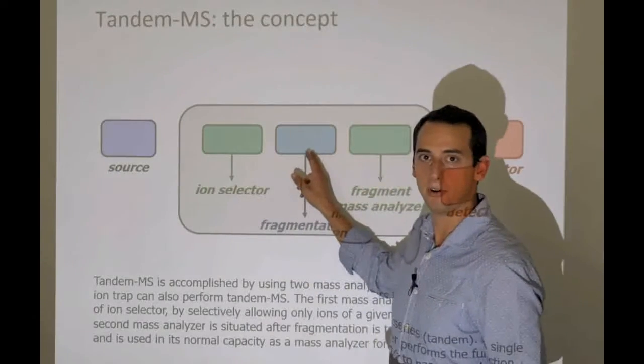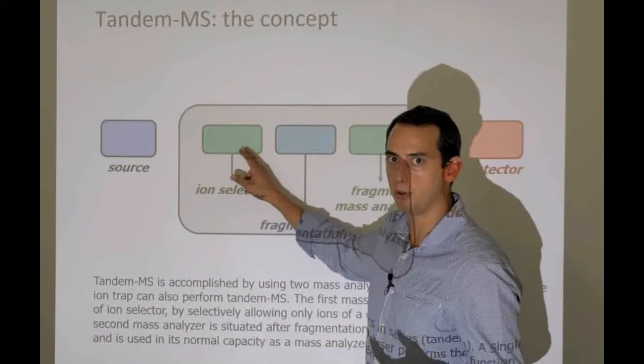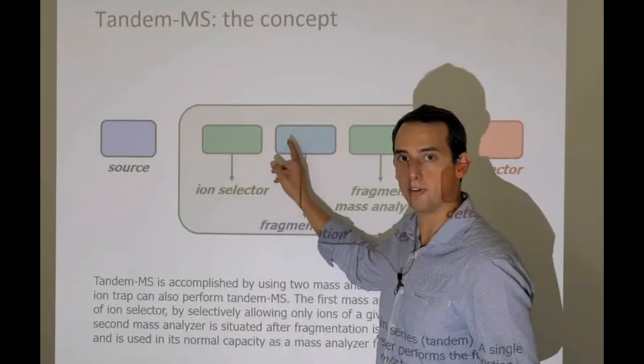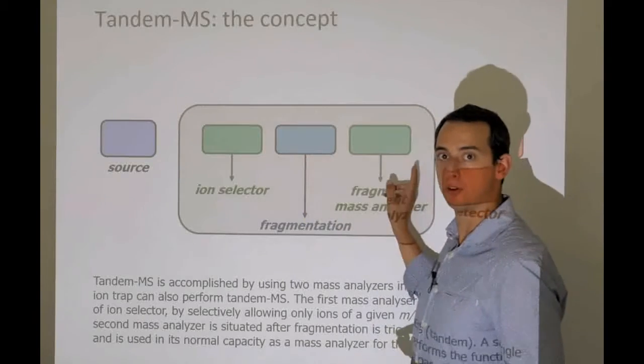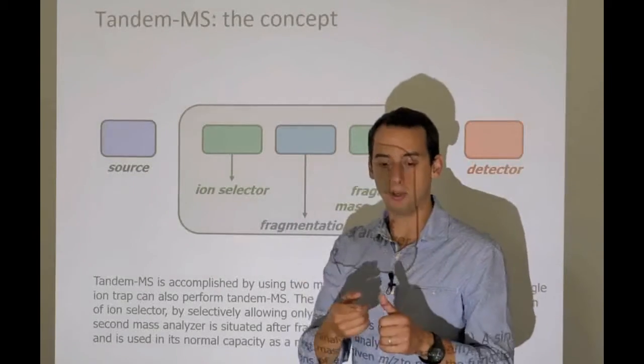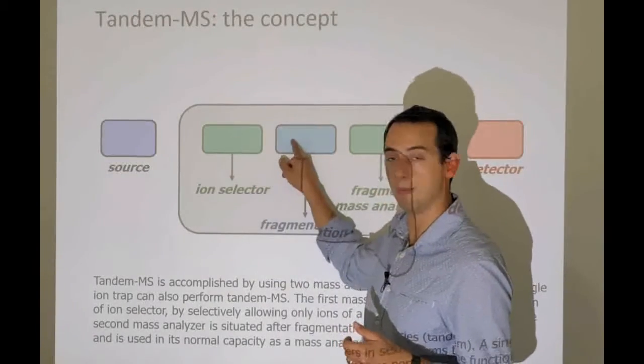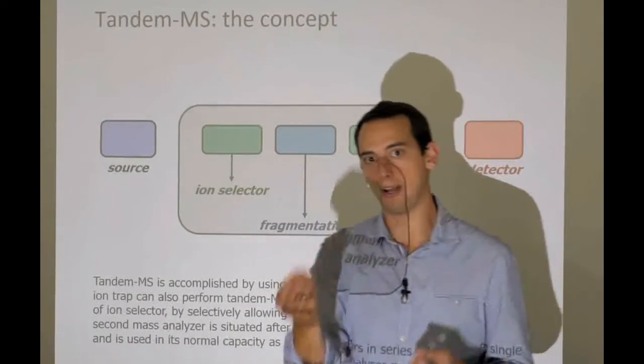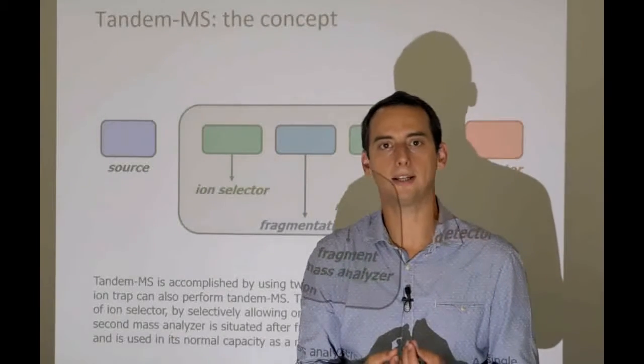Instead of letting all the peptides into the fragmentation chamber at once, we use a bouncer like a quadrupole or an ion trap to keep everybody else out, only let one type of ion in. That type of ion will then be fragmented into its constituent parts and then we measure all the fragments. The combination of the fragments and the intact mass should be enough to uniquely identify a particular analyte.